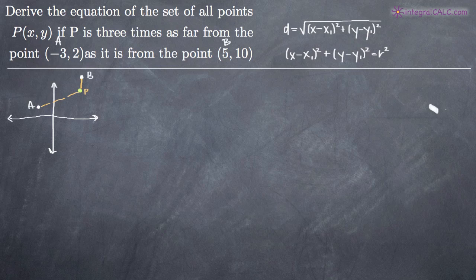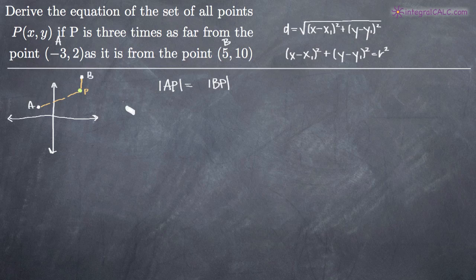Now what we want to do is find an equation that models the relationship between the distance A to P and the distance B to P. We know that the distance between A and P is three times as large as the distance between B and P, which means we need to multiply the distance between B and P by three in order for the two sides of this equation to be equal to one another.